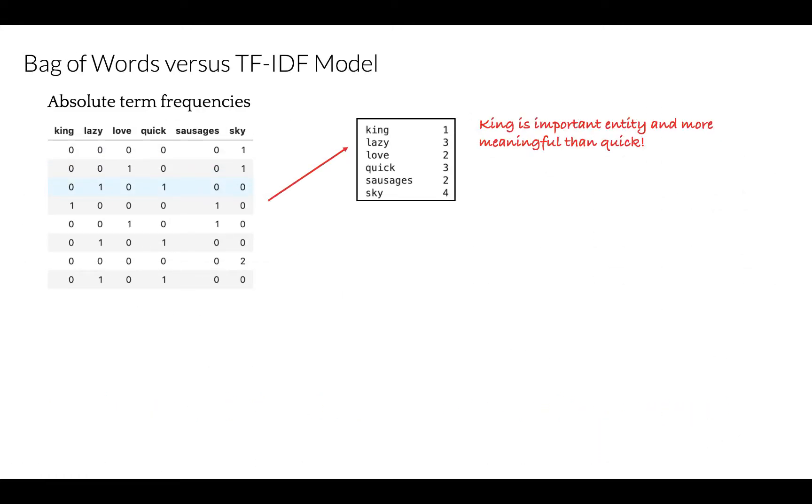There are some potential problems that might arise with the bag of words model when it is used on large corpora. If we count all words equally, then some words end up being emphasized more than we need. And for example, the main character, as for instance in our small corpus, king will not stand out by simple frequency count alone. As you can see, the frequency count for king is just one. We would like a representation that highlights meaningful words.